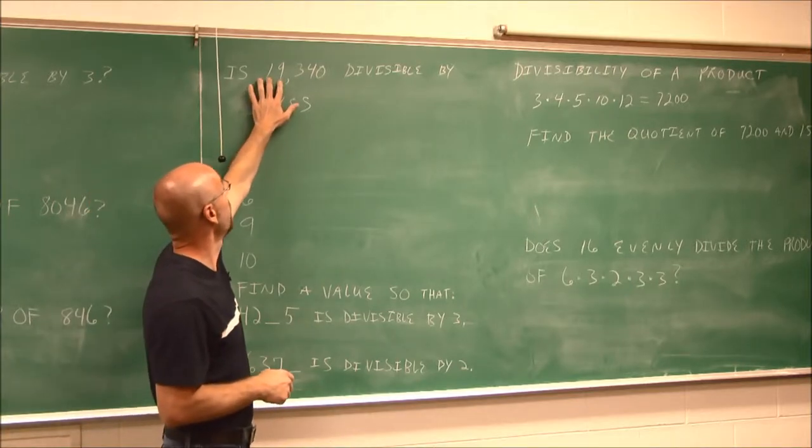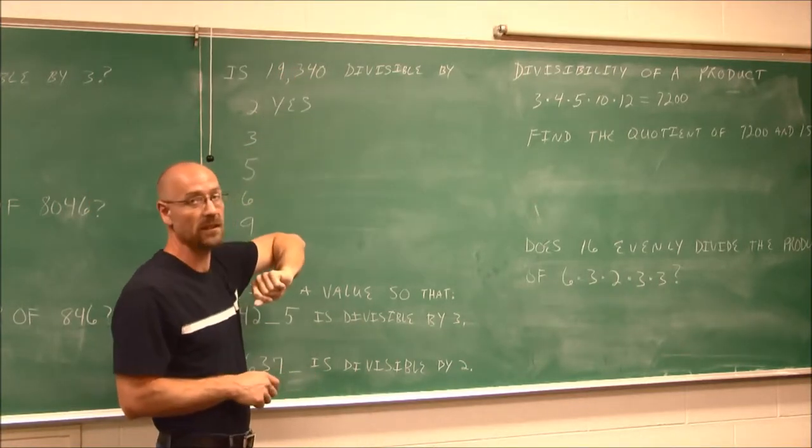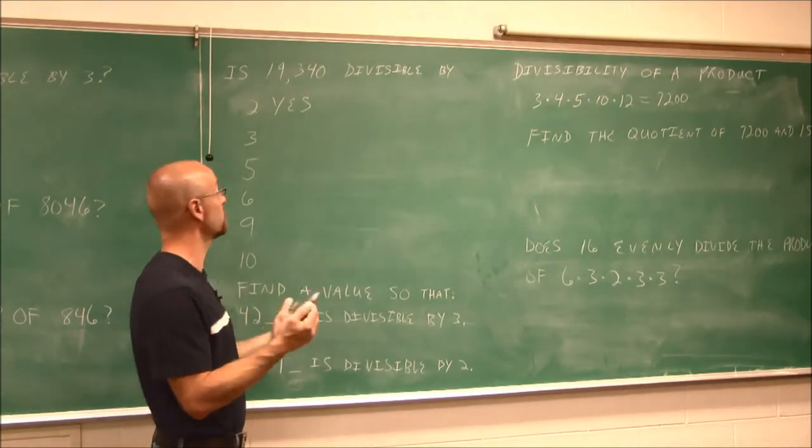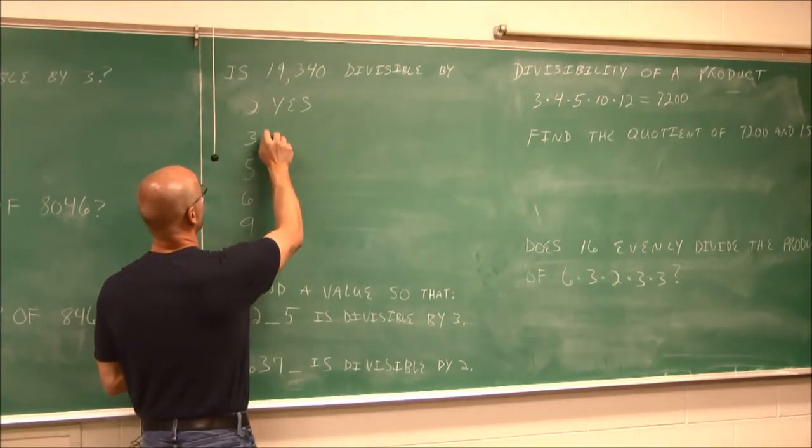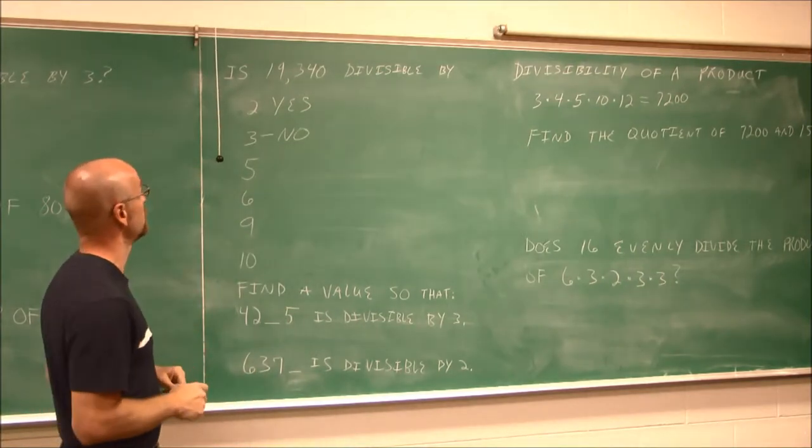Well, let's find out. 1 and 9 is 10, plus 3 is 13, plus 4 is 17, plus 0 is still 17. 17 is not divisible by 3, so this number is not divisible by 3.